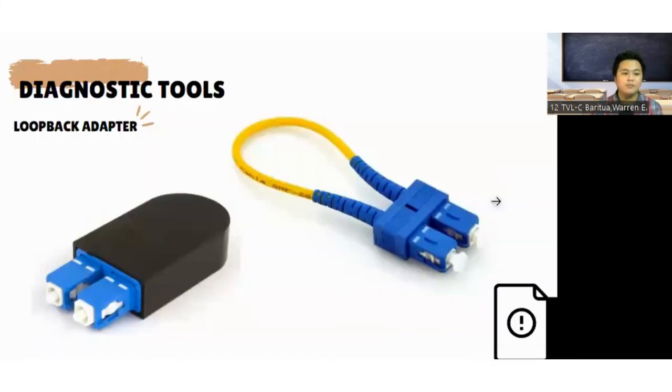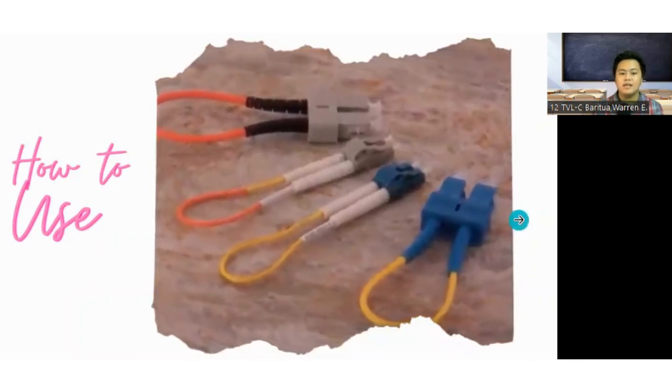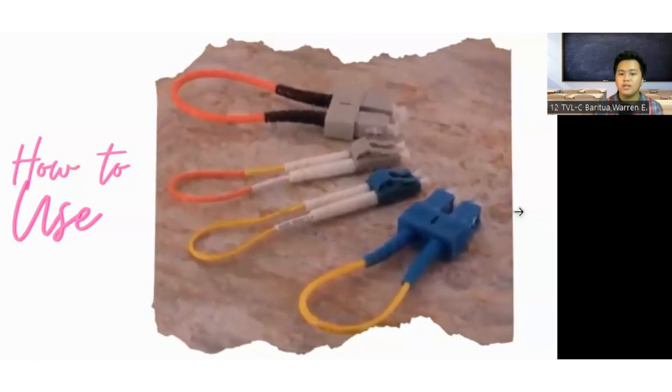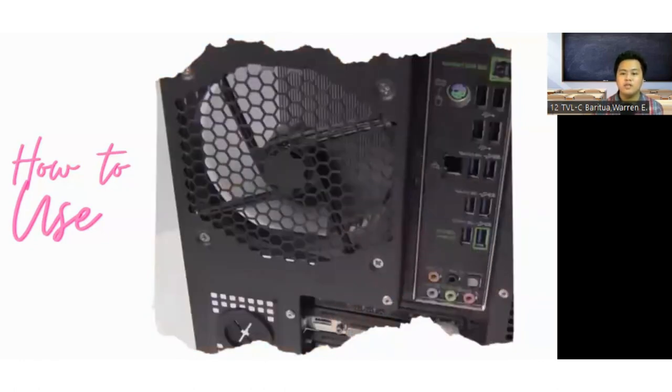Lastly is the Loopback Adapter, which is a plug used to test physical ports to identify network issues. It provides system test engineers with a simple but effective way of testing transmission capability and receiver sensitivity of network equipment. Loopback Adapters come in different sizes, and in this video, we check if that port is still working by inserting the adapter. The green light indicator lit up, which means it is still working.